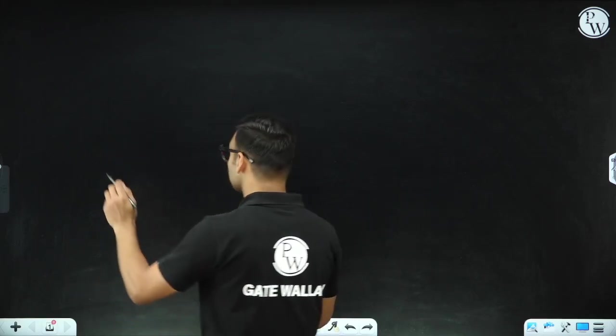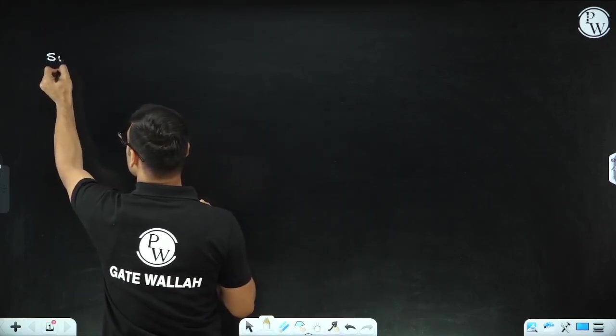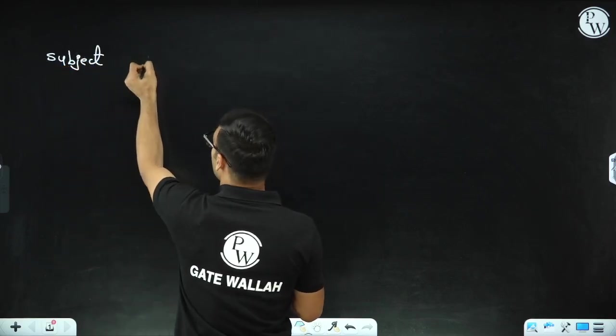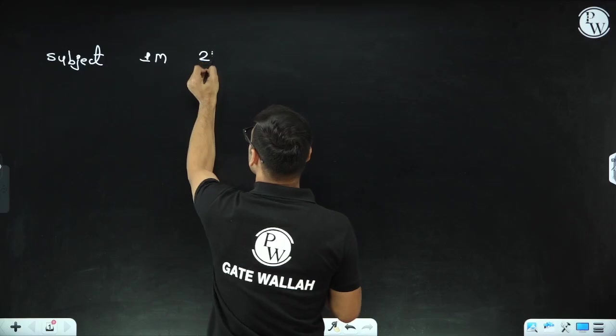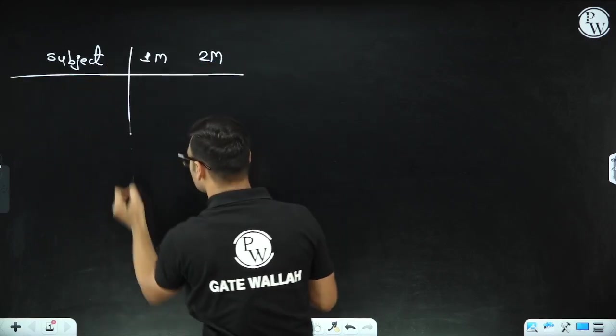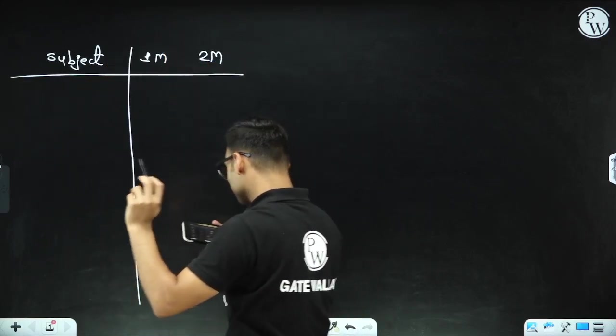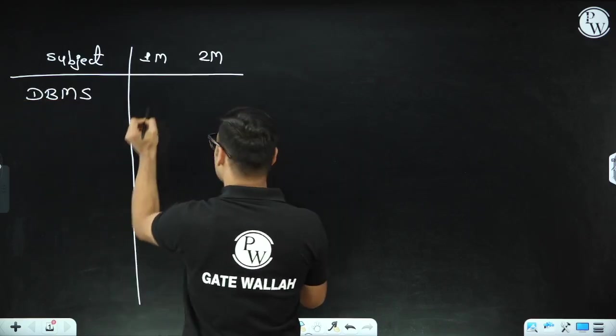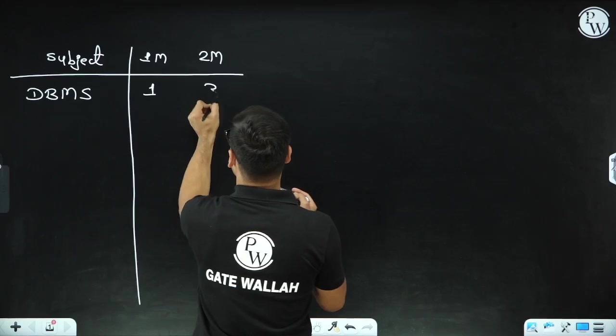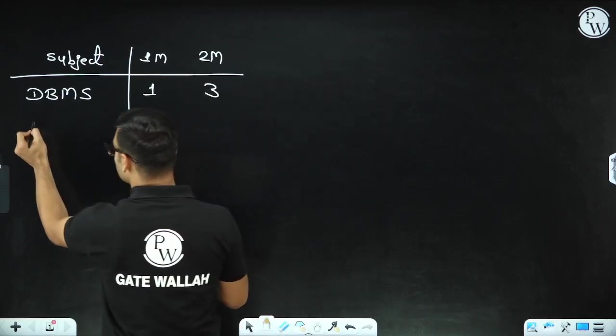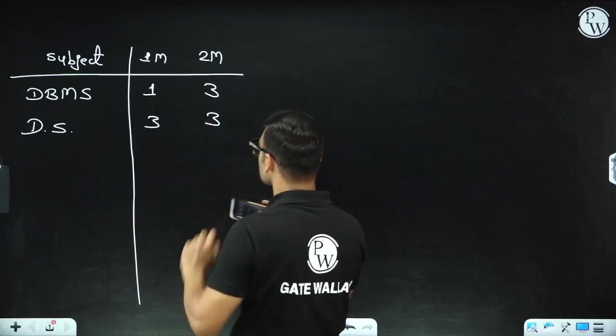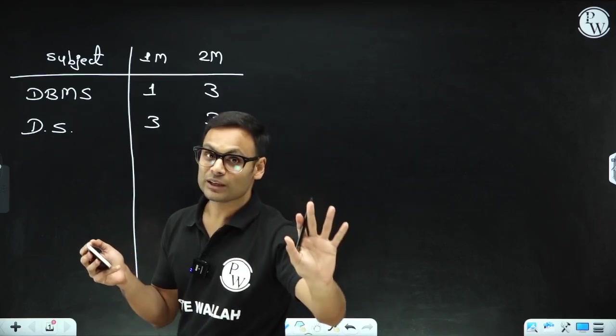I'll give you an analysis based on courses - which subjects had how many one-mark and two-mark questions. I'll give you a table quickly so you can understand. Database Management System had one one-mark question and three two-mark questions. Data Structures had three one-mark questions and three two-mark questions - so many questions as expected.